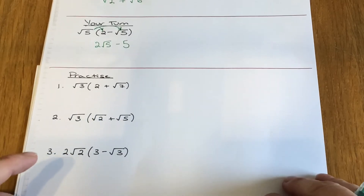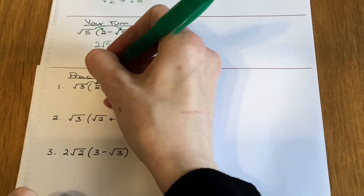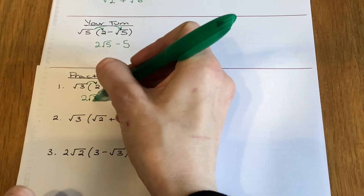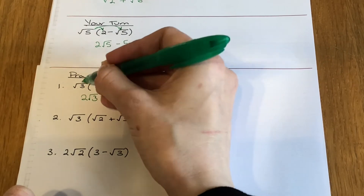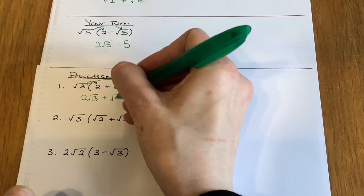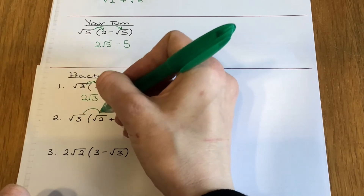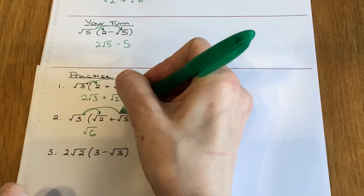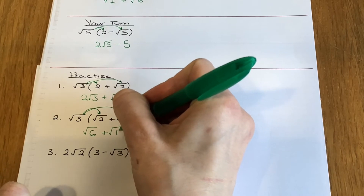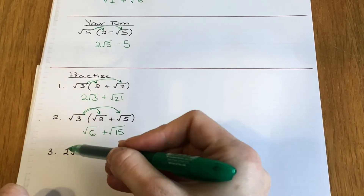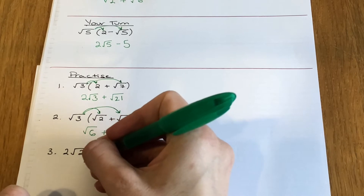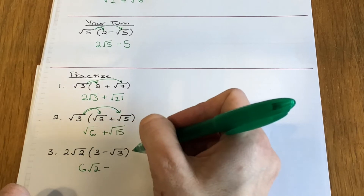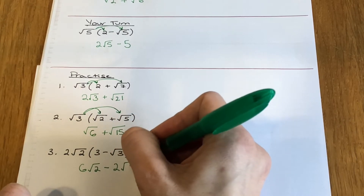Okay, let's go through these. Root 3 times 2 is 2 root 3, plus root 3 times root 7 is root 21. Question 2: root 3 times root 2 is root 6, root 3 times root 5 is root 15. Here I've got 2 root 2 times 3, which gives me 6 root 2, minus 2 root 2 times root 3, which is 2 root 6.